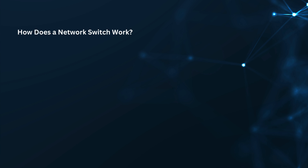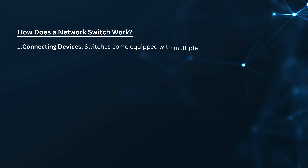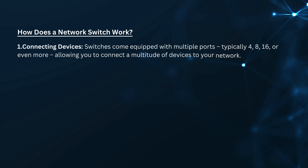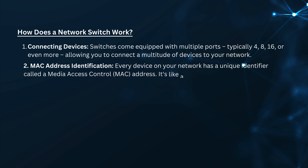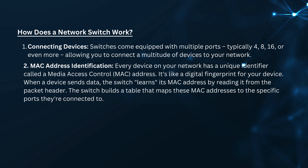How does a network switch work? Here's a breakdown of the magic behind a network switch. Connecting devices: switches come equipped with multiple ports, typically 4, 8, 16, or even more, allowing you to connect a multitude of devices to your network. MAC address identification: every device on your network has a unique identifier called a Media Access Control (MAC) address — it's like a digital fingerprint for your device. When a device sends data, the switch learns its MAC address by reading it from the packet header, and builds a table that maps these MAC addresses to the specific ports they're connected to.